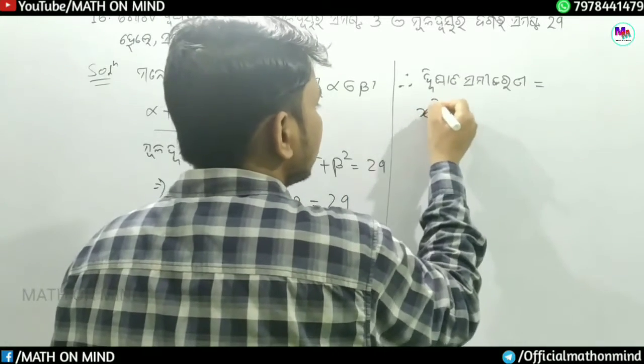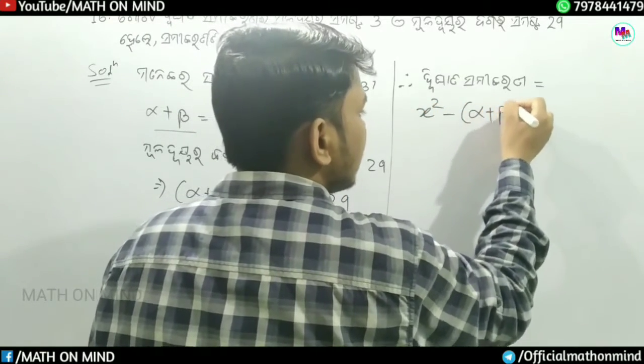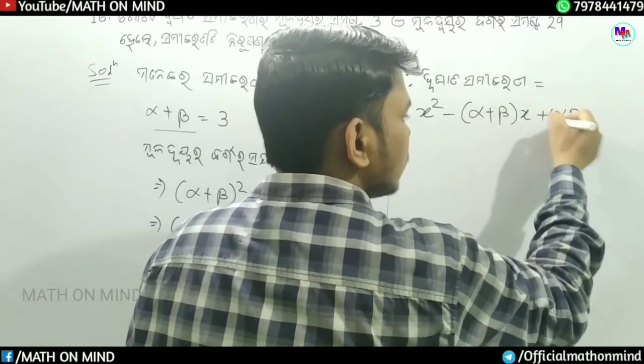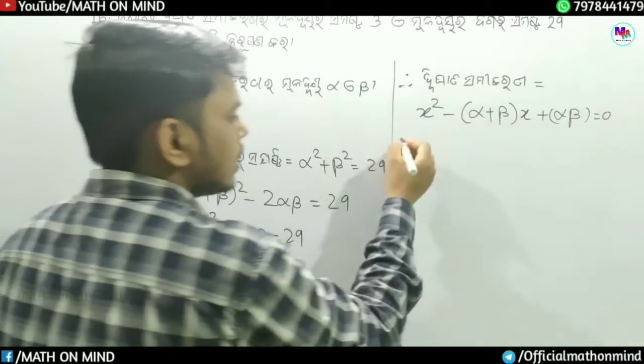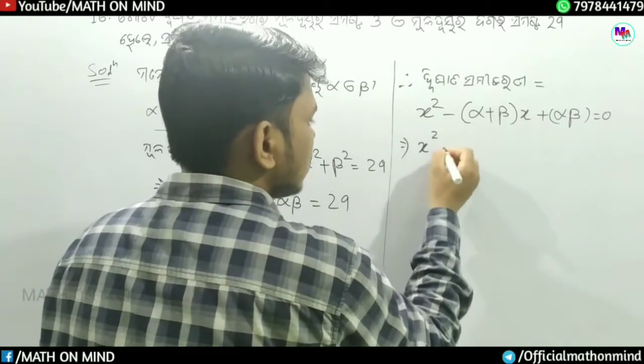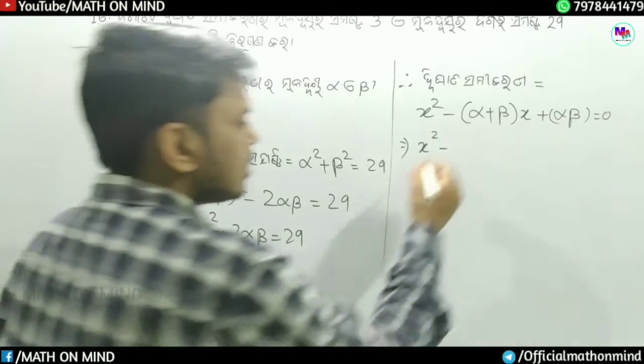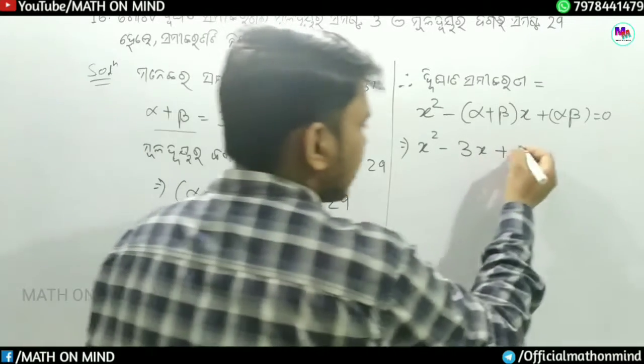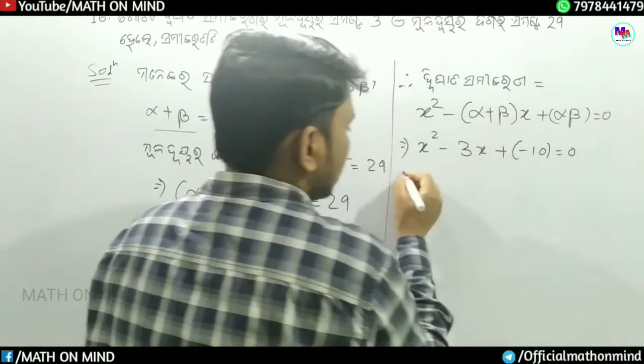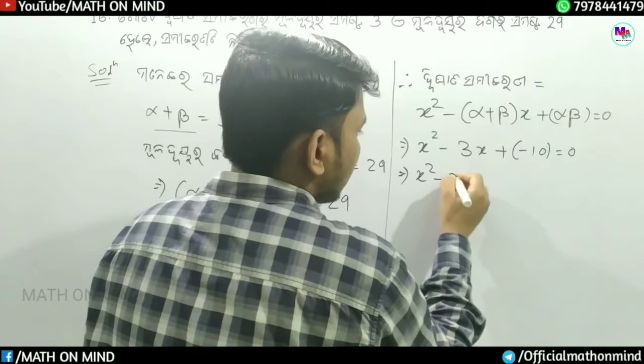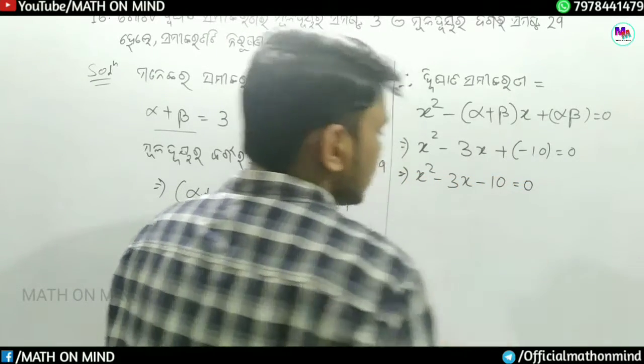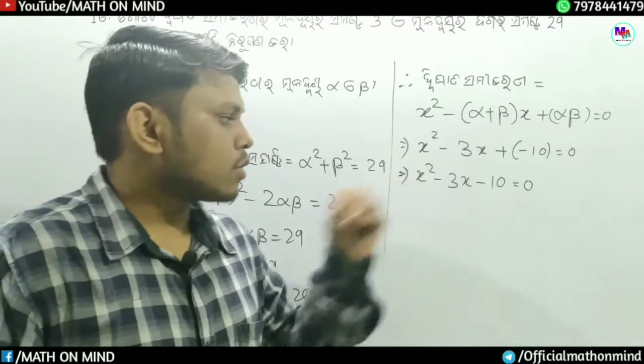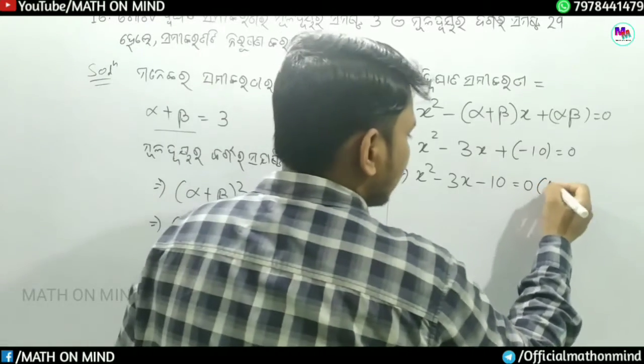Now, the equation is x square minus alpha plus beta into x plus alpha into beta is equal to zero. That is x square minus 3x plus minus 10 is equal to 0, so x square minus 3x minus 10 is equal to 0.